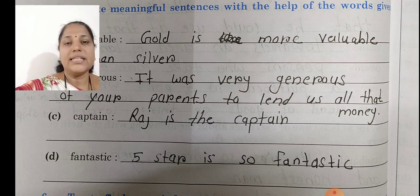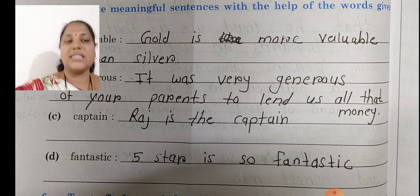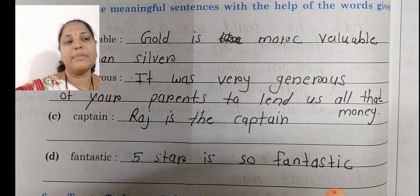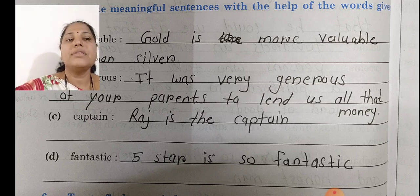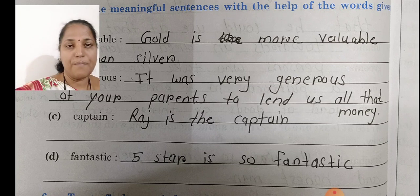Next sentence is D — 'fantastic': Five star is so fantastic. Chocolate chahiye tha aage mention hua. Iske aage aap chocolate ki jagah 'bar' bhi likh sakte hain — fantastic bar — toh bhi aapko chalega.